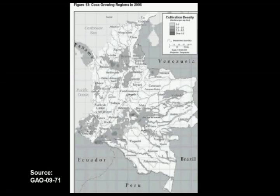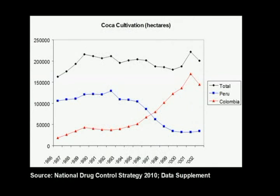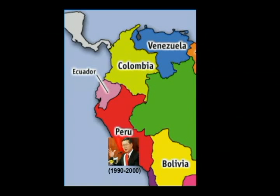The balloon effect is not only present within countries, but also among them. In this graph, we can see the net coca cultivation in two countries: Perú in blue and Colombia in red. On the top in black are the total hectares of coca crops in the Andean region. Notice how the black line remains relatively stable. In the meantime, there is a shift in the cultivation of coca from Peru to Colombia. This shift obeys the efforts of Perú's President Alberto Fujimori to reduce coca cultivation between 1990 and 2000. The pressure in Peru moved the cultivation of coca to Colombia.